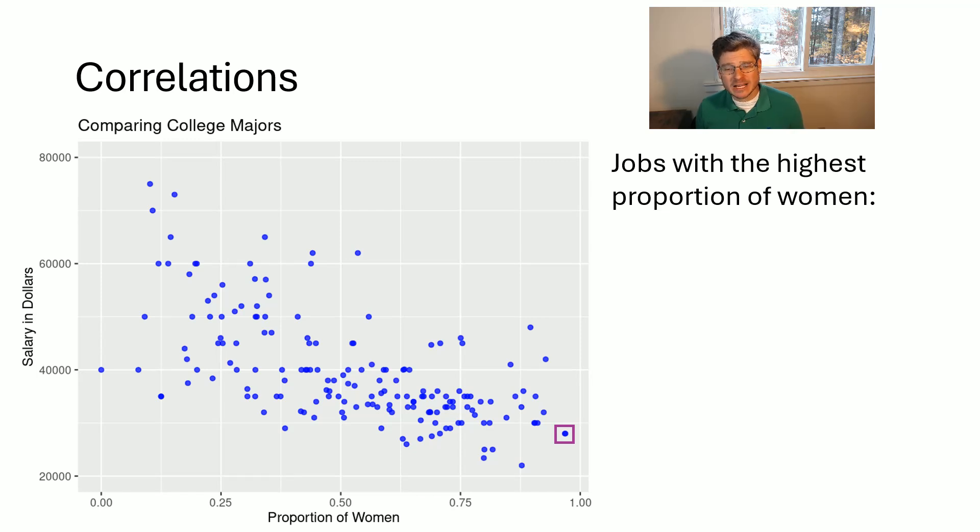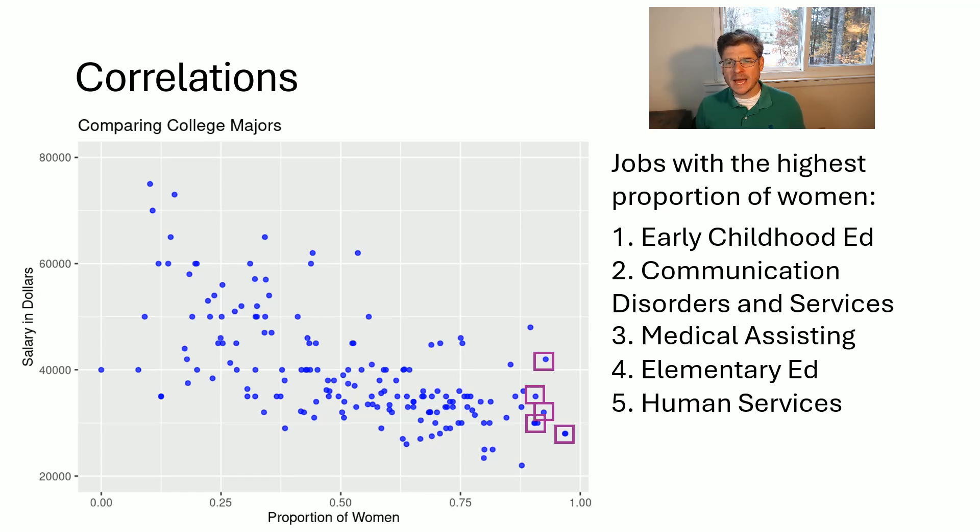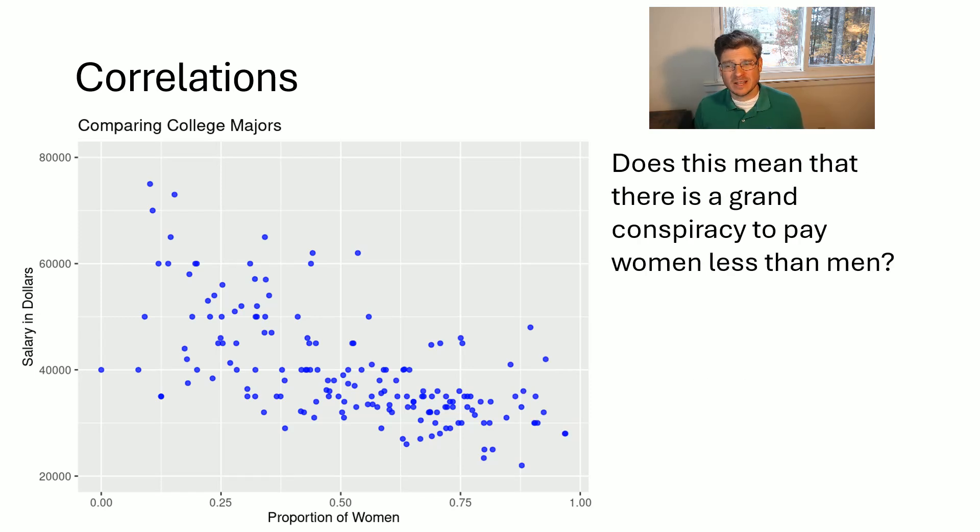Now, let's take a look at the jobs with the highest proportion of women at the other end of this pattern. And so, the job with the highest proportion of women at over 97% is early childhood education. That is a major that is almost exclusively women. And we see that that's down there with a high proportion of women and a lower salary. This next point is the degree communication disorders and services. The next point would be medical assisting. And then our last two over here would be elementary education and human services, respectively. So, what are the patterns here? The highest salaries but lowest women were engineering. And the highest women and the lowest salaries were education, services, and education and services.